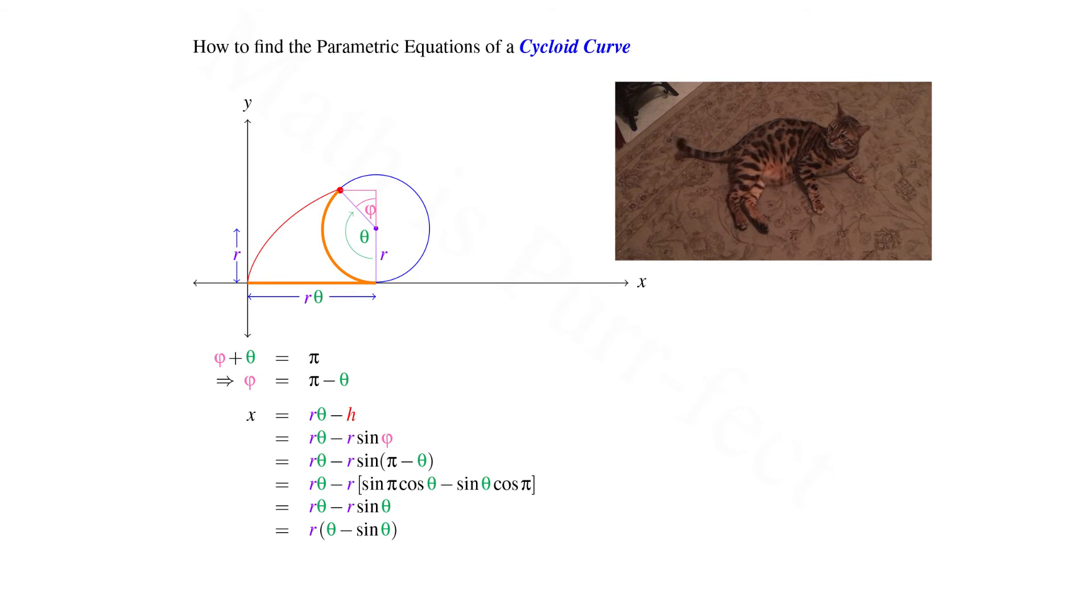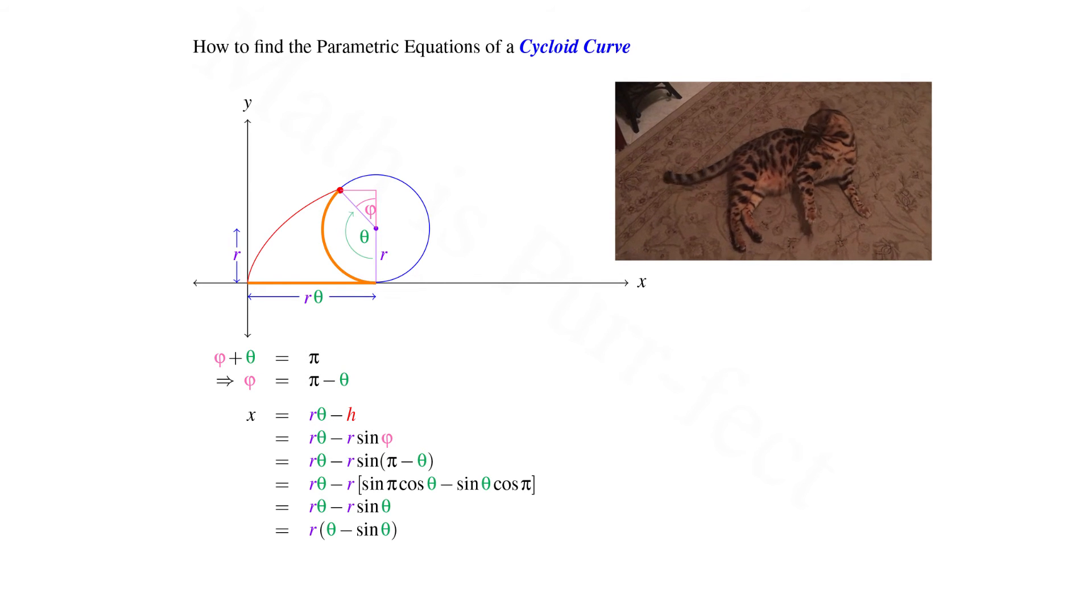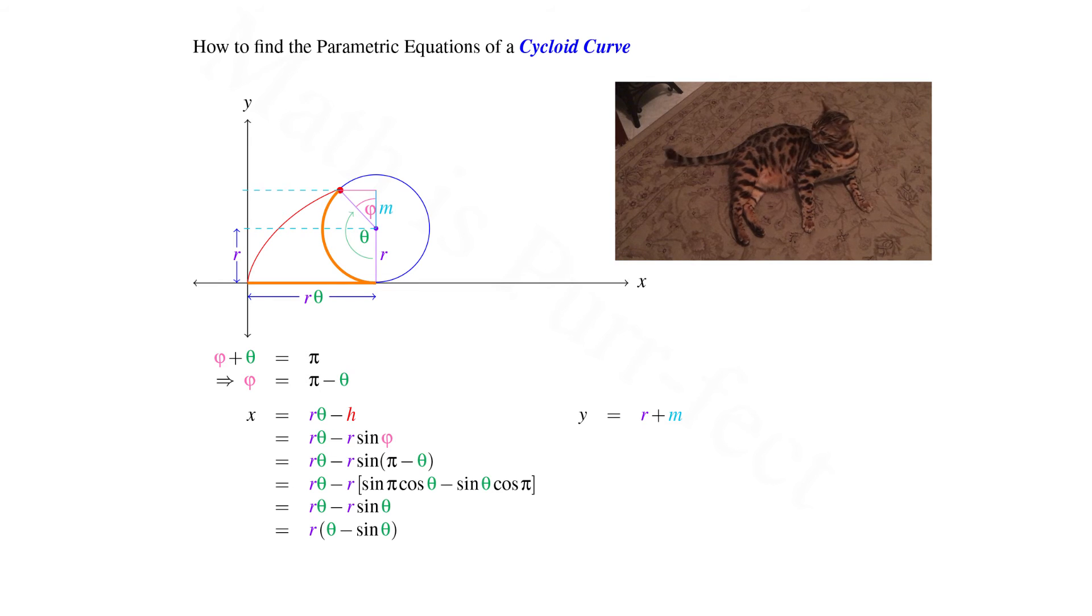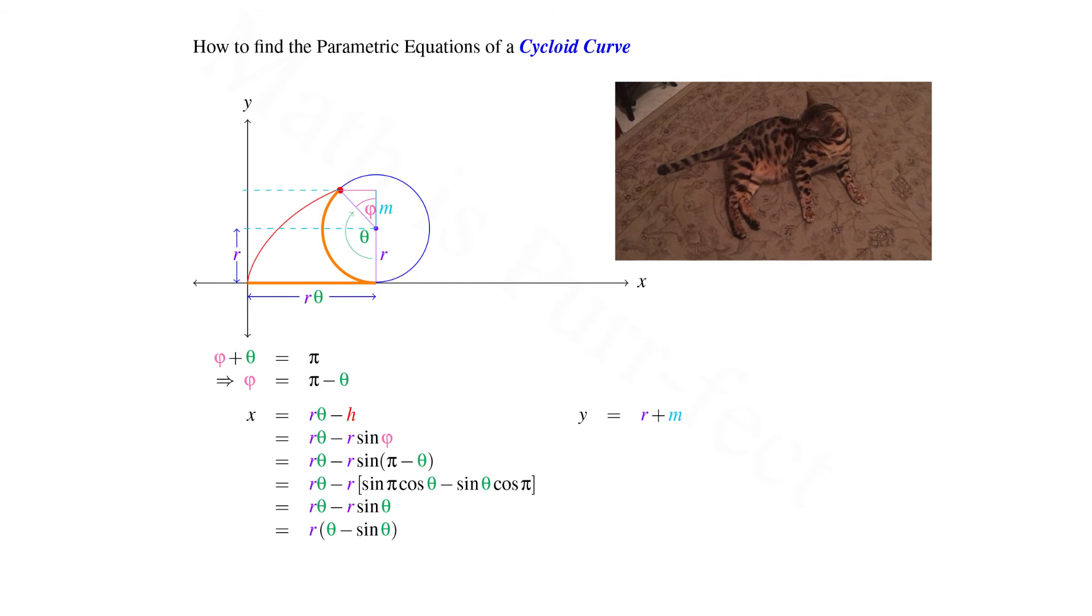Now let's consider how we can solve for y in the same manner. We note that the coordinate for y, as pictured, is greater than the circle's radius. Let's call this distance m. Hence, the y-coordinate can be written simply as r plus m.